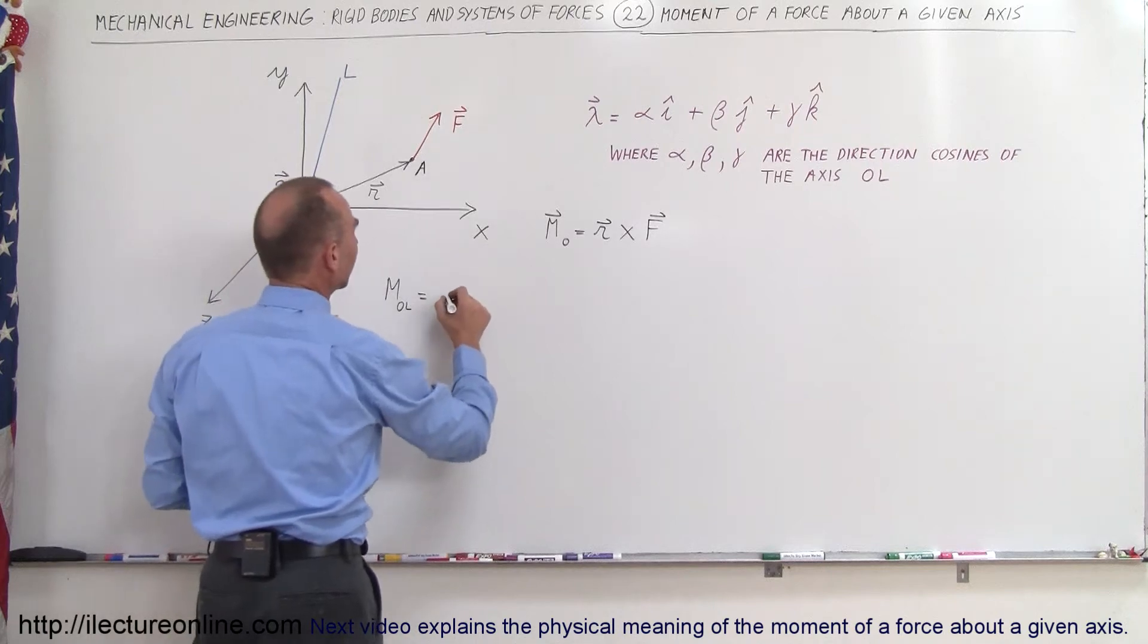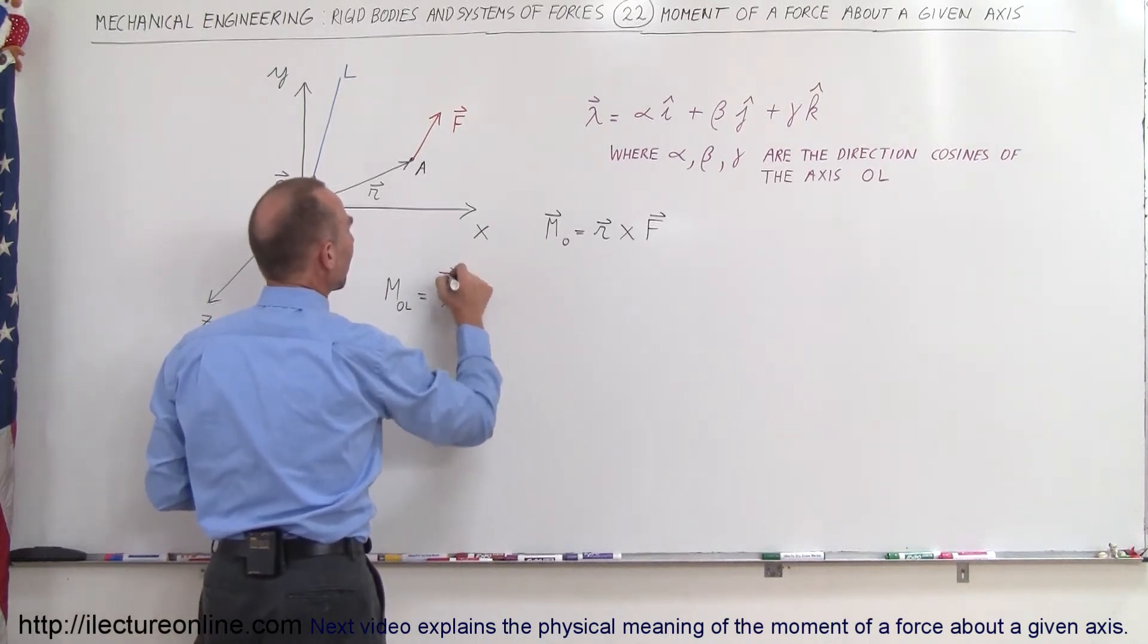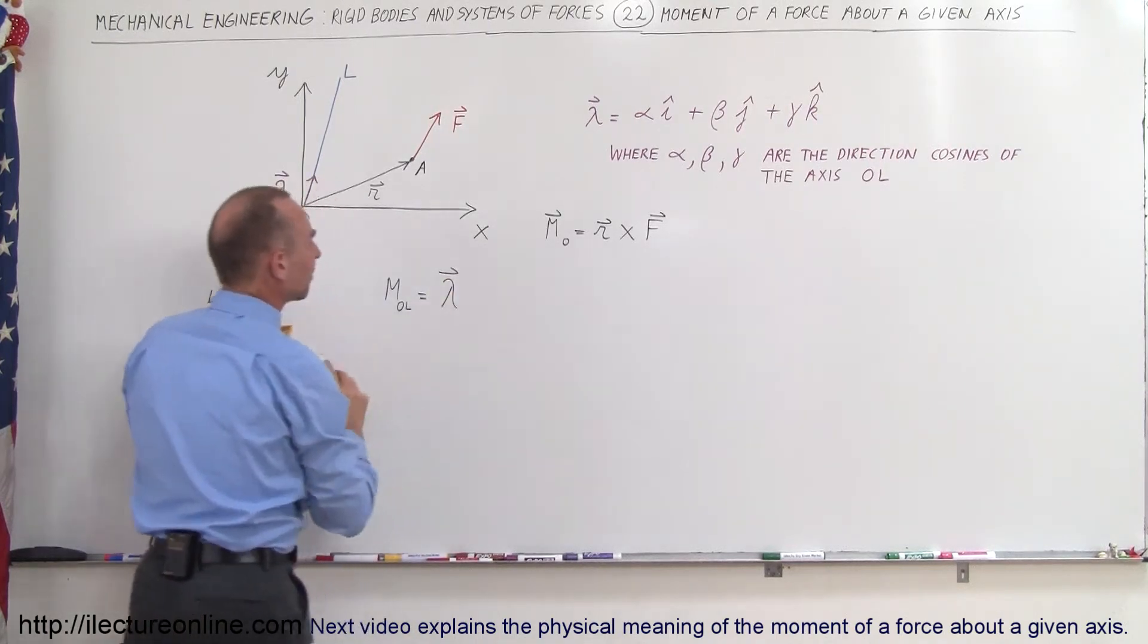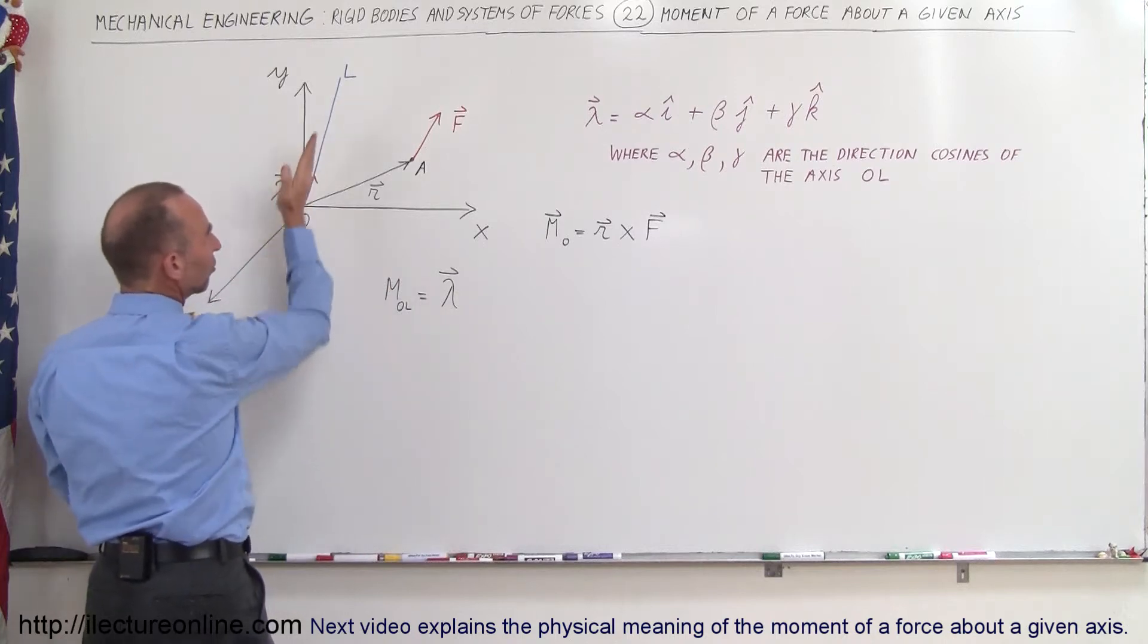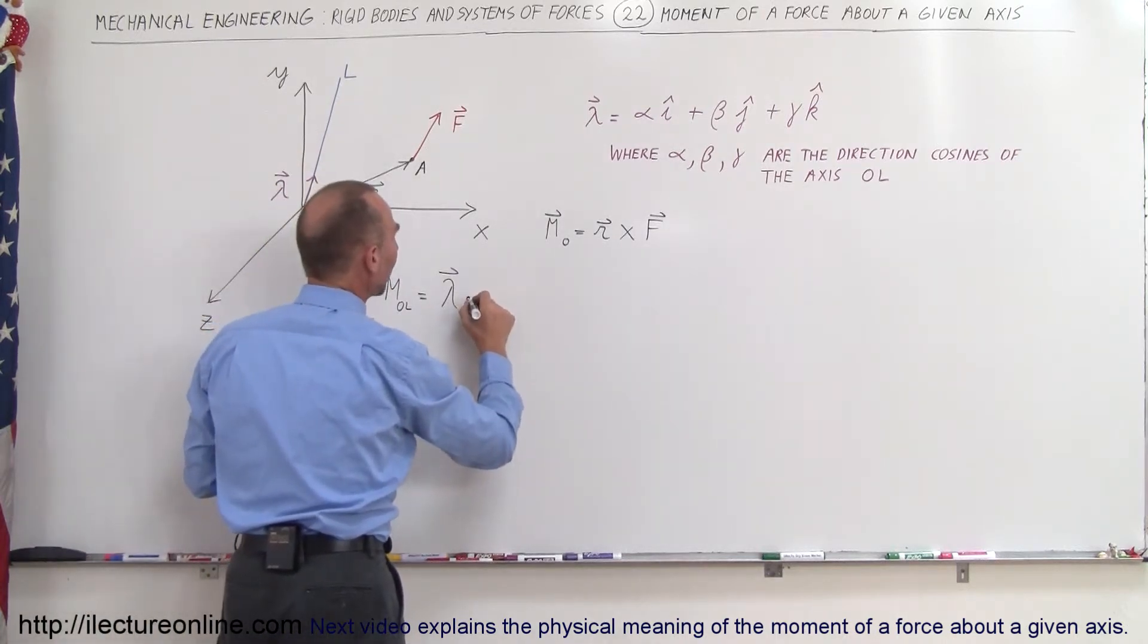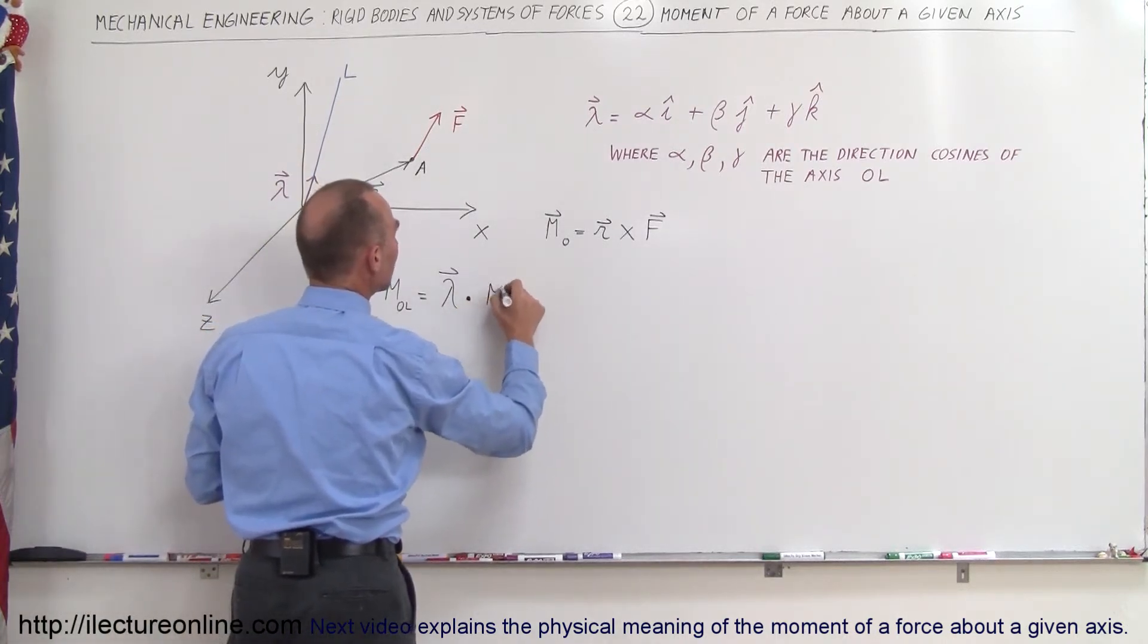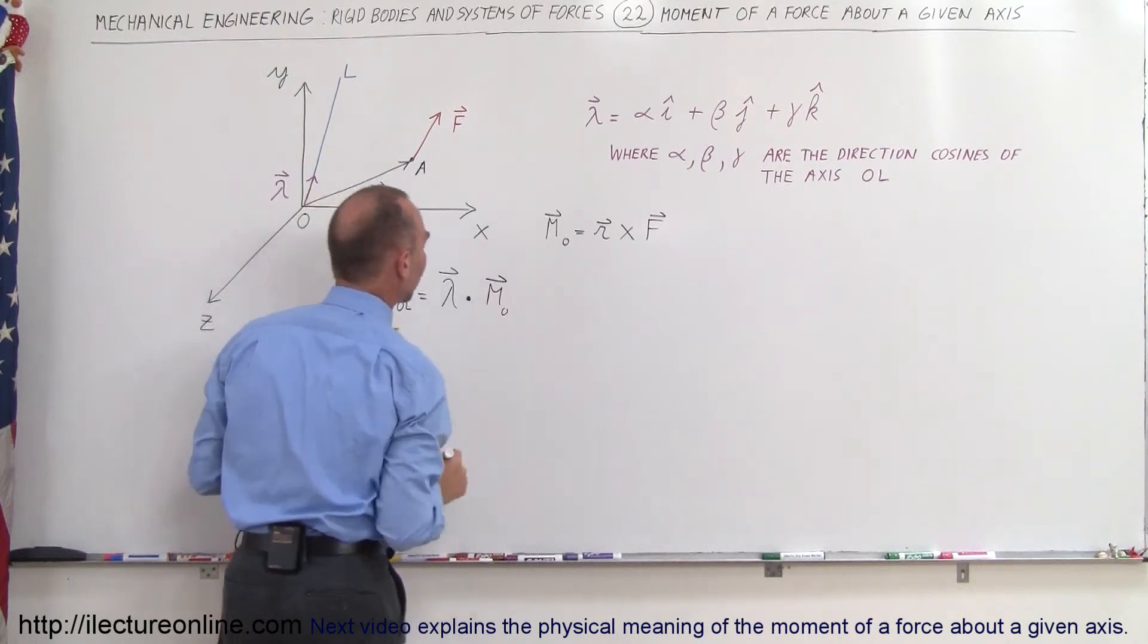We're finding the magnitude, which is equal to the unit vector along the direction of that axis (not the position vector) with the dot product times the moment about the origin.